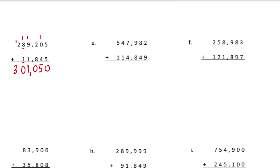Problem E: 547,982 plus 114,849. 2 plus 9 is 11 — carry the 1; 1 plus 8 plus 4 is 13 — carry the 1; 1 plus 9 plus 8 is 18 — carry the 1; 1 plus 7 plus 4 is 12 — carry the 1; 1 plus 4 plus 1 is 6; and 5 plus 1 is 6. We get 666,831.